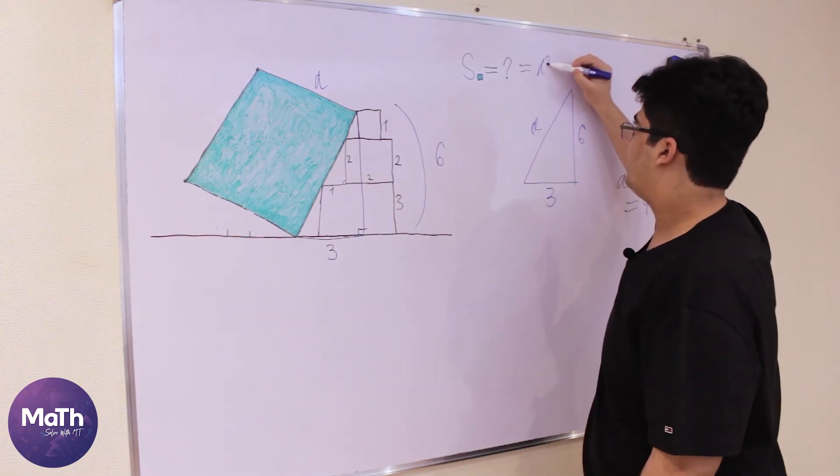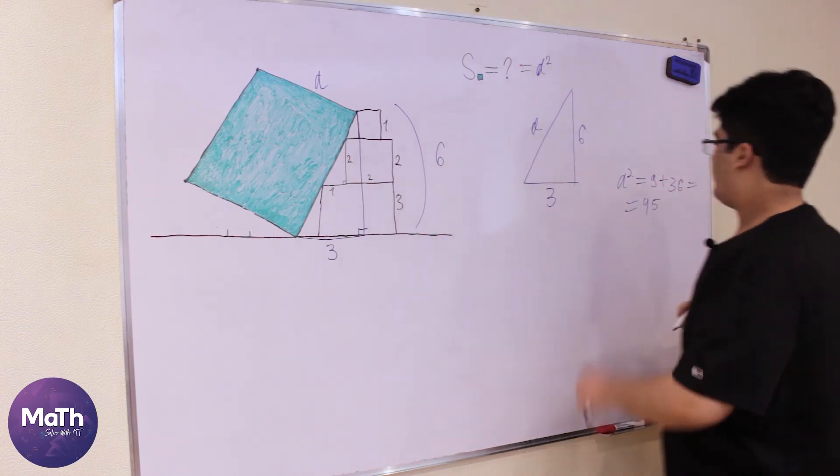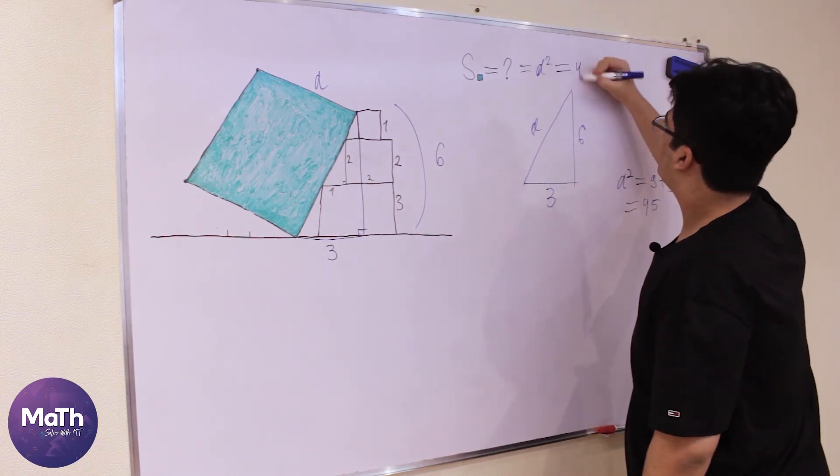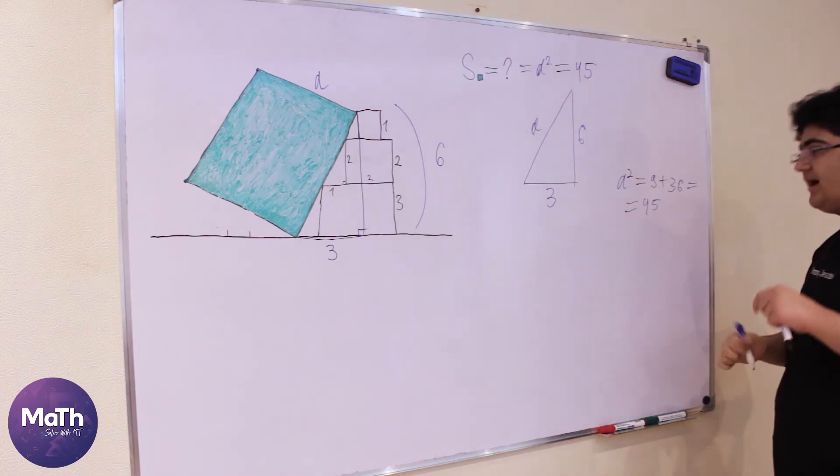The area of the square with side length a is equal to a². So a² equals 45, and 45 is the answer.